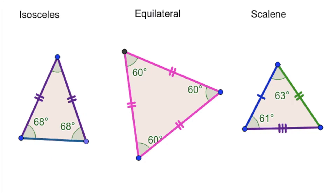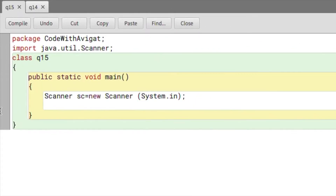An isosceles triangle is basically when two sides of the triangle are the same but the third side has a different value. An equilateral triangle is when all three sides are equal. And lastly, a scalene triangle is when all three sides are of different values. Now let's start writing the code.